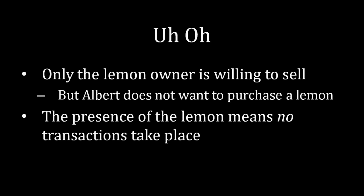So that means only the lemon owner is still willing to sell at that price. But Albert doesn't want to purchase a lemon — if he knows the vehicle is a lemon, he would rather just not buy it at all. And so the presence of the lemon means that no transactions take place, even though if information were revealed, Albert would be able to buy the car from Barbara if the car were a peach or an average vehicle. The lack of information here massively destroys the trading market for this vehicle.